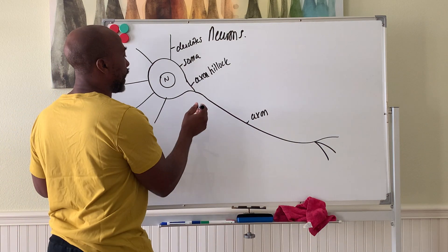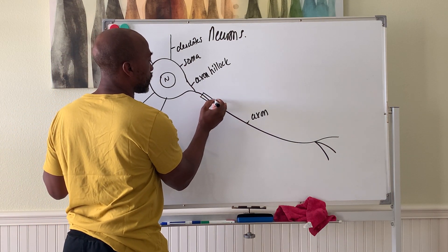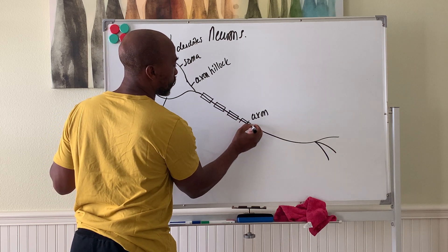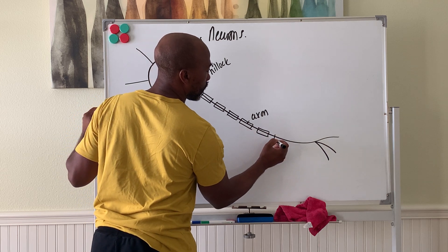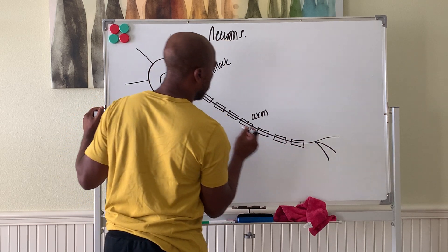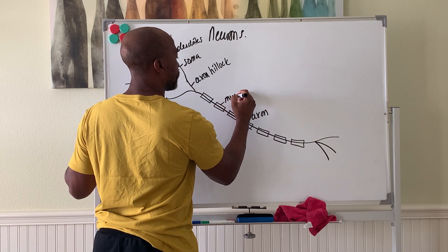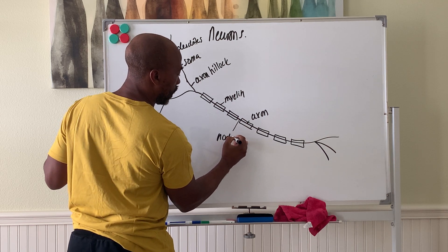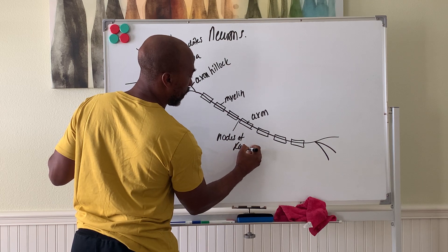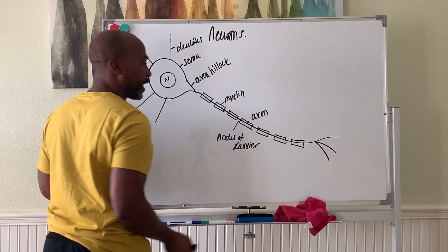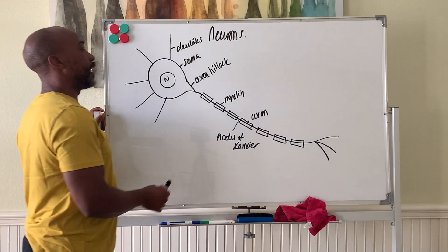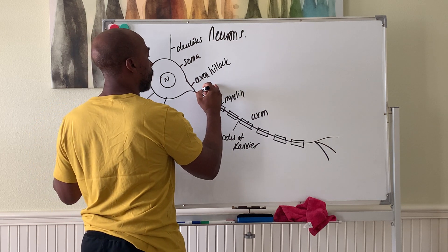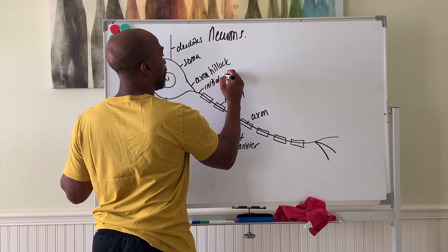Most axons are myelinated, so you'll have your myelin segments on the axon. This is myelin. The gaps between the myelin are called your nodes, and the first exposed segment before you get to your first myelin segment is called your initial segment.